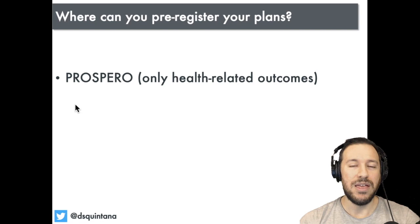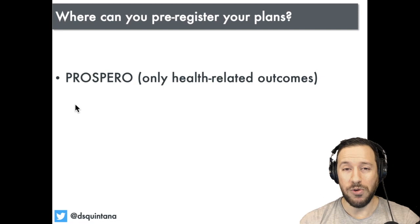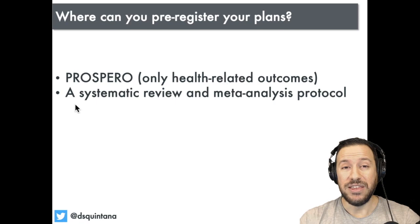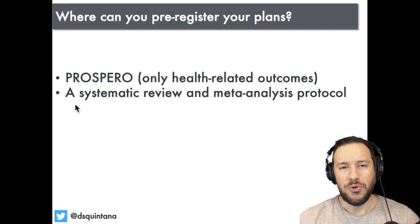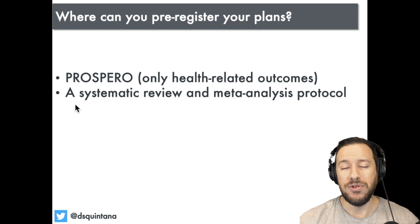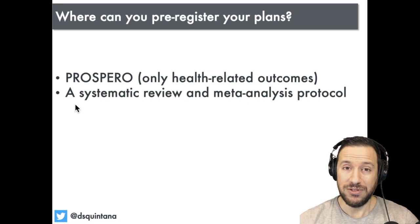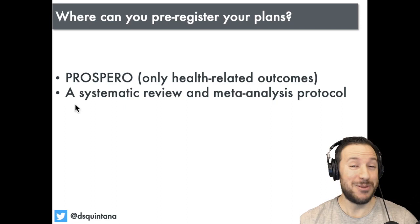There are a few different places to register your meta-analysis. If you have a biomedical outcome, PROSPERO is a great website — it walks you through protocol registration step by step and takes about half an hour, but keep in mind it's only for biomedical studies. Another option is writing a systematic review and meta-analysis protocol. Many journals in the BMC family accept this format, and your protocol gets peer-reviewed so you get feedback. It's an extra publication — protocols do get citations — though peer review can take anywhere from six weeks to a year.